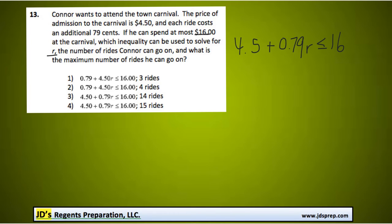So now we can see that the inequality is either number 3 or 4. Options 1 and 2 don't make sense because they're doing $4.50 times the number of rides, but $4.50 is the price of admission.